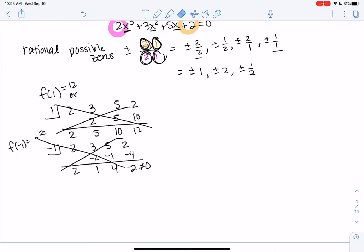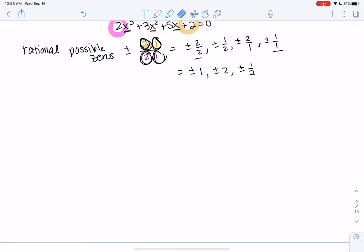Hopefully one of those works. So 2, remember the coefficients, 3, 5, 2. We get 2. 2 times 2 is 4, 7. This isn't looking good. These numbers are getting big. 2 times 7 is 14. This is looking even worse.